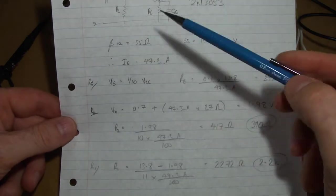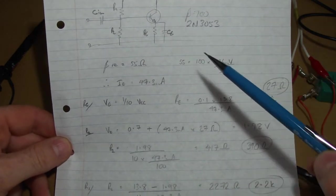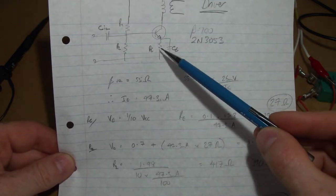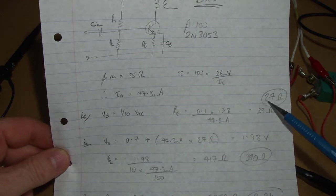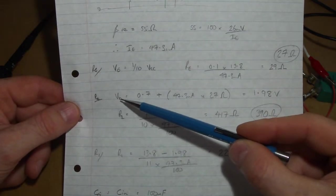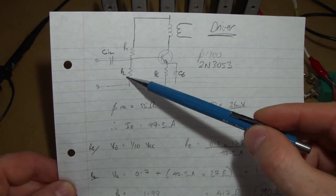Same theory as before, setting the emitter voltage to be a tenth VCC, and then we can work out what the emitter resistor is going to be. That turns out to be 27 ohms, exactly the same theory as we've seen before for the two voltage divider resistors, R1 and R2.